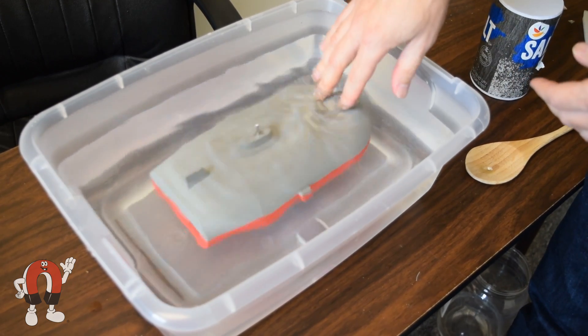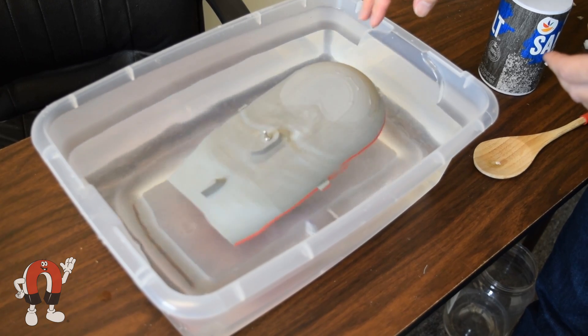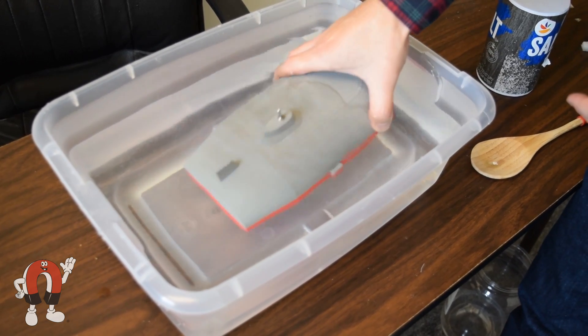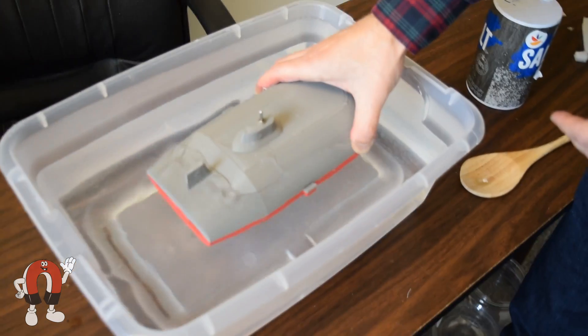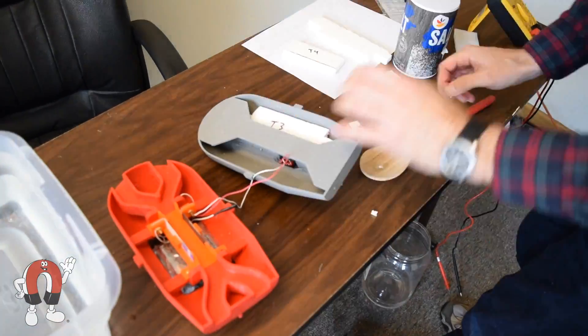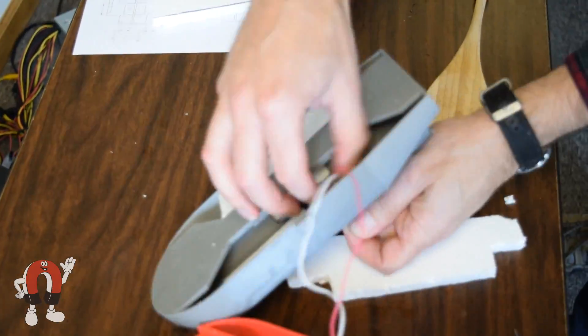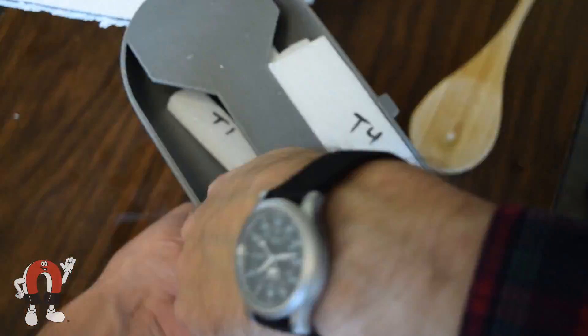It sinks. The submarine wasn't buoyant enough as is. So some pre-cut pieces of styrofoam are inserted into the upper hull.